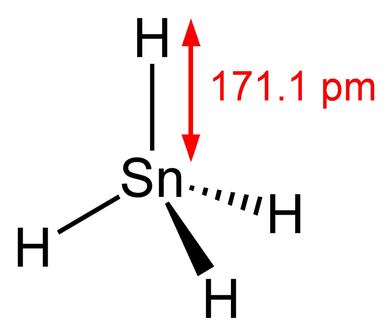Stanane, or tin hydride, is an inorganic compound with the chemical formula tin-4 hydride. It is a colorless gas and the tin analog of methane. Stanane can be prepared by the reaction of tin-4 chloride and LiAlH4.